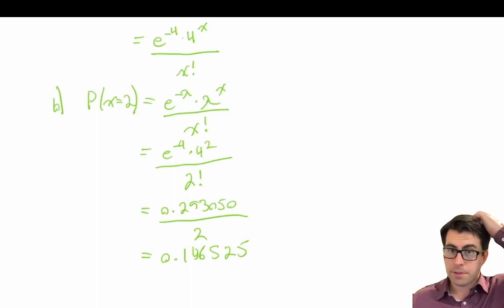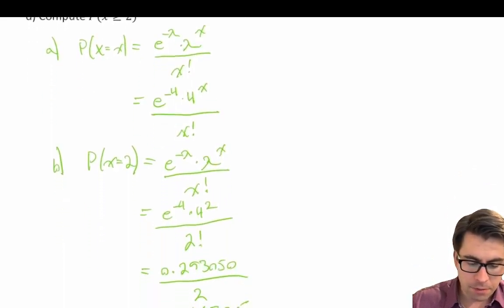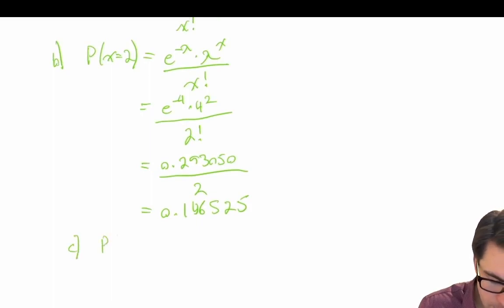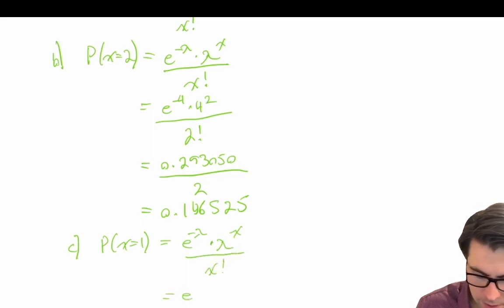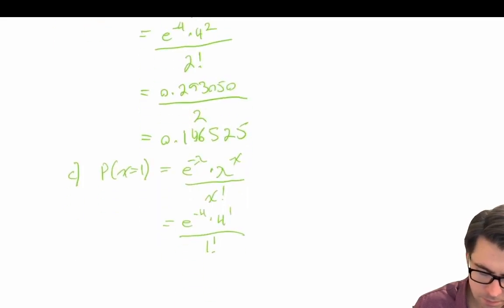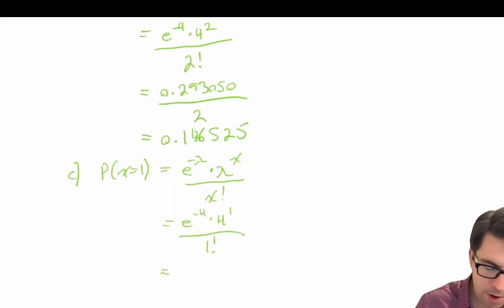Part c: compute the probability that x equals 1. P(x = 1) = e to the power of negative 4, times 4 to the power of 1, divided by 1 factorial. E to the negative 4 times 4, divided by 1, equals 0.073263.